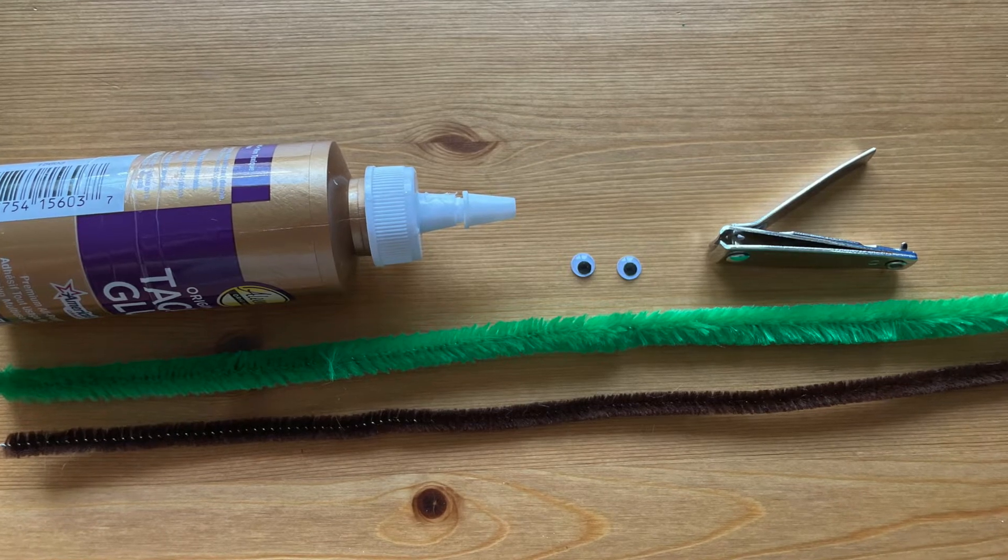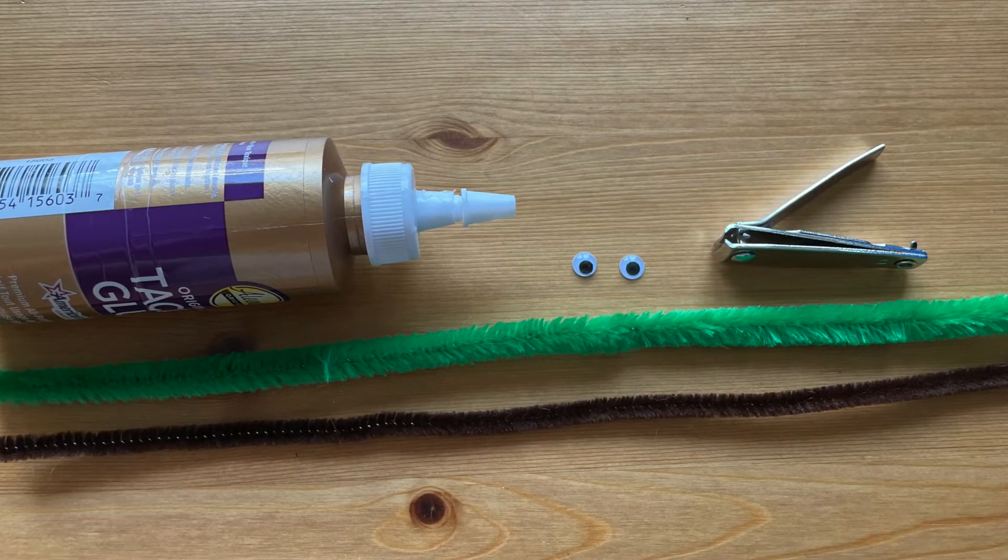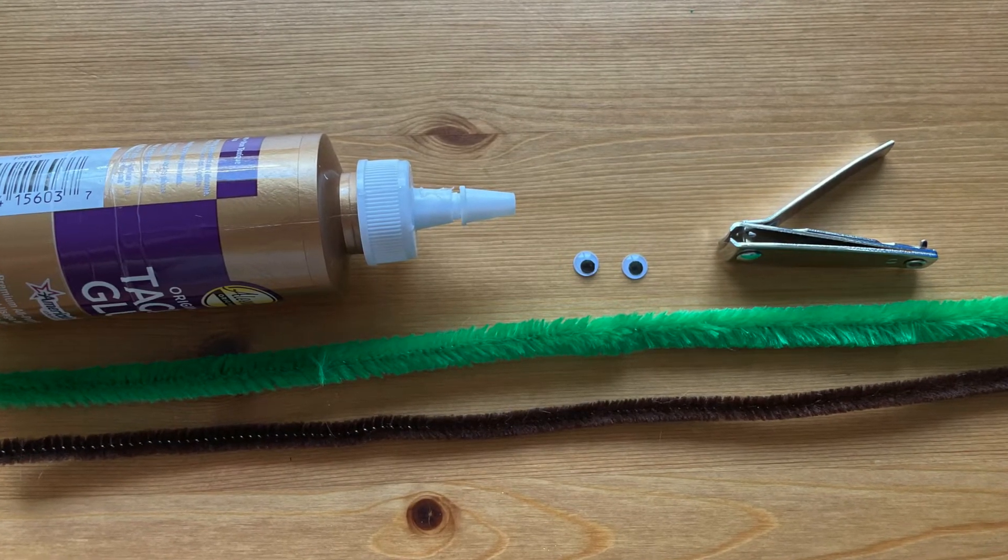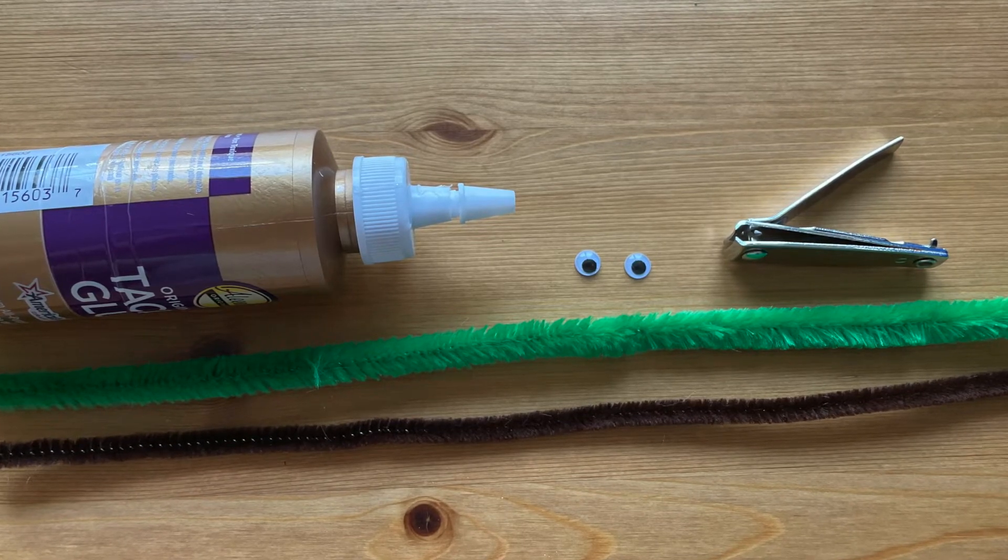For this project you will need one green extra fluffy pipe cleaner, a brown pipe cleaner, fingernail clippers, googly eyes, and thick white craft glue.